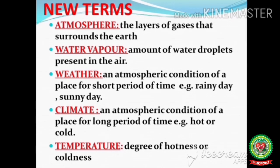Atmosphere: the layer of gases that surrounds the earth. Water vapor: the amount of water droplets present in the air. Weather: the atmospheric condition of a place for a short period of time, for example a rainy day or sunny day. Climate: the atmospheric condition of a place for a long period of time, for example hot or cold. Temperature: the degree of hotness or coldness.